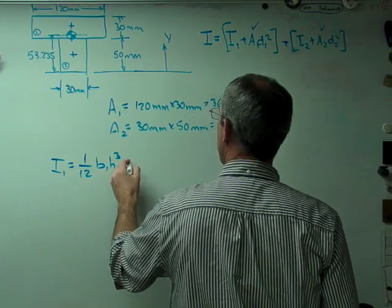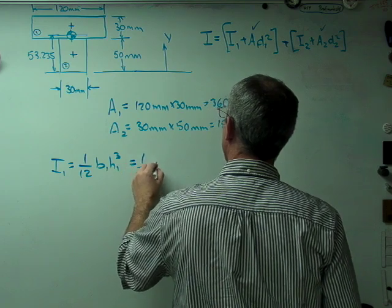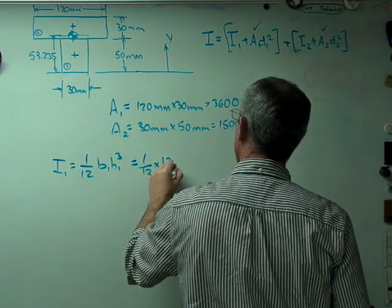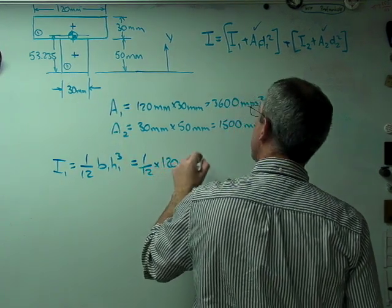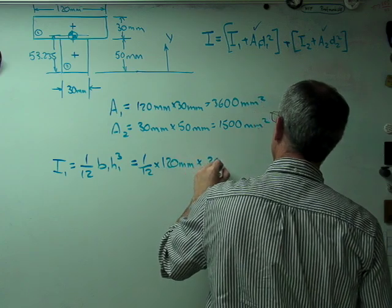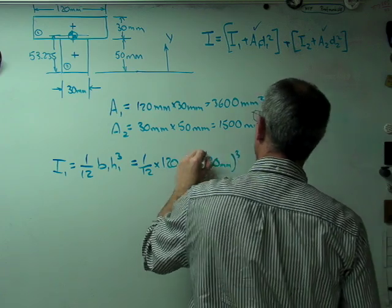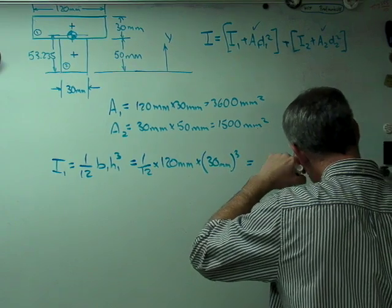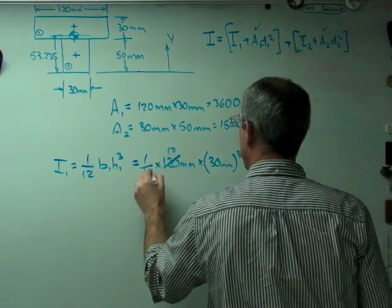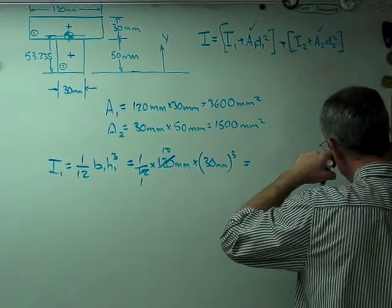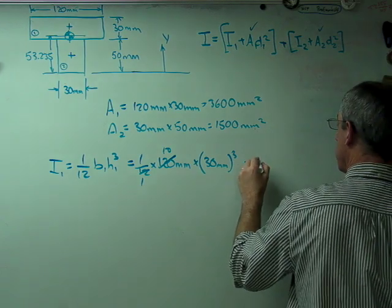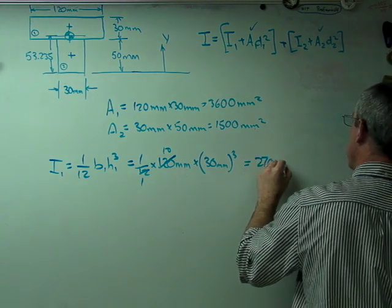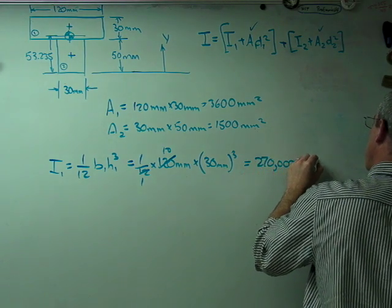There's the expression for I1, 1/12 B1 H1 cubed. So 1 over 12, B1 is 120 millimeters, times H1, which is 30 millimeters cubed. If you work that out, by the way, that's 10 and that's 1. That's going to be 27,000, so we get 270,000 millimeters to the fourth.